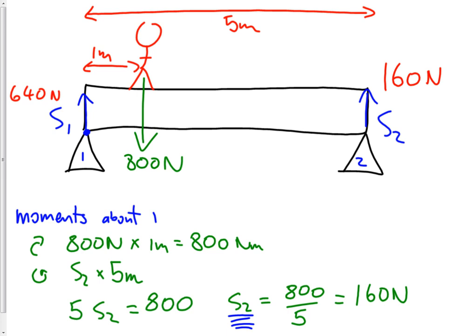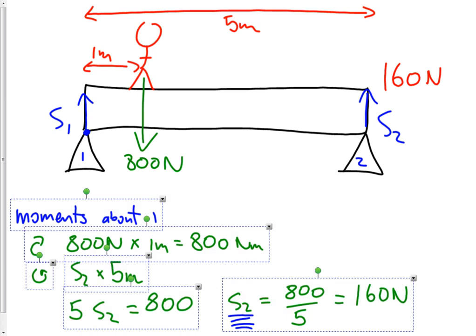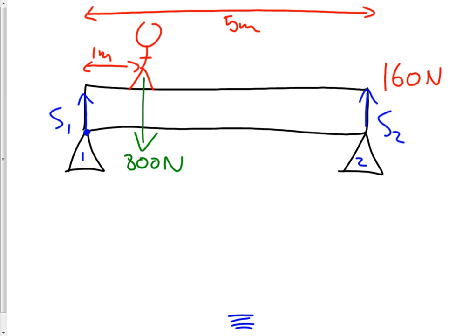Or, we could just repeat the moments process the other way around, and maybe we'll do that just for practice. So now, if we take moments about support point 2, moments about 2, just for some practice. Okay, so now let's take the pivot. We're putting the pivot here.